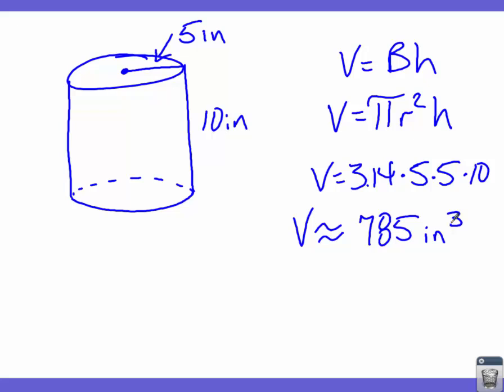Remember, volume of a rectangular prism, a triangular prism, and a cylinder all use one formula: volume equals capital B times H. For a rectangular prism, plug in length times width for the base. For a triangular prism, plug in base times height divided by two. For a cylinder, plug in pi r squared. Then multiply by the distance between the two bases. That's how you find volume of a prism or a cylinder.